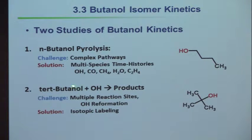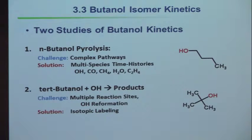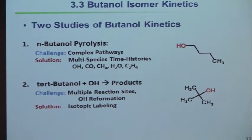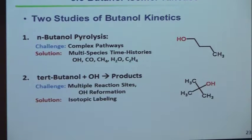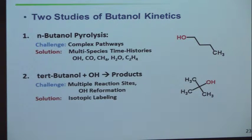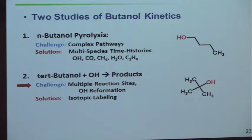The challenge with tert-butanol is that we'd like to measure the removal of OH the way we just showed you — put in OH with an excess of tert-butanol, watch the OH decay, and determine the rate coefficient for pseudo-first-order decay. But there's a problem: if it's an oxygenated species, it may break and produce competing OH, which complicates things. When you react, you're not only removing some H, but also releasing some OH, and that confuses your experiment.